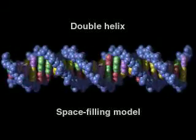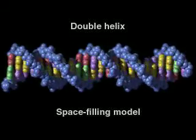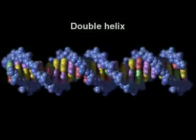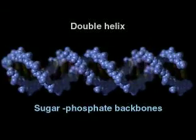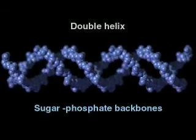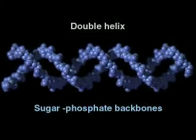The two sugar-phosphate backbones on the outside of the double helix are easy to spot. We will highlight the backbones in blue.